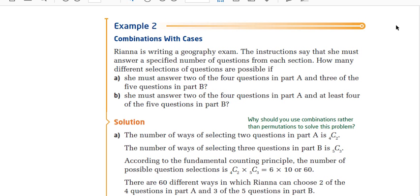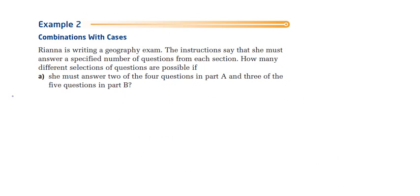All right, I'm going to take a few minutes to run through example two with you, because questions with cases are probably the trickiest for most of my students. So, I'm just going to run over this real quick. Now, the question says this. Rihanna is writing a geography exam. The instructions say she must answer a specified number of questions from each section. How many different selections of questions are possible if? Here's A. She must answer two of the four questions in part A, and three of the five questions in part B. So, we've got two of four. So, we've got four, and I'm taking two at a time. Now, is this going to be a permutation? Or combination? Well, if you think about the question, she's writing an exam. Does it really matter which one of the two she writes first, or she completes first? No, it doesn't.